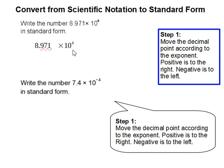So in this case we have 8.971 times 10 to the 4th power. And 4 is positive so we move it to the right 4 times: 1, 2, 3, and 4. And since the 4th time there is no number we can put a 0 there. So our resulting answer is 89,710.